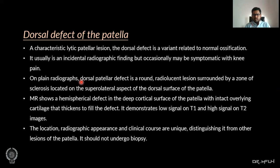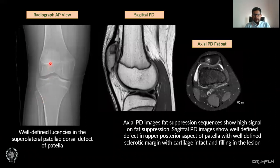The location, radiographic appearance, and clinical course are unique, distinguishing it from other lesions of the patella. It should not undergo biopsy as it is a benign condition. Here we can see an AP radiograph of the knee showing well-defined lucency in the superior lateral aspect of the patella suggesting a dorsal defect. Sagittal proton density and sagittal proton density fat-sat images show high signal intensity in the upper posterior aspect of the patella with a well-defined sclerotic margin and intact cartilage filling the lesion.